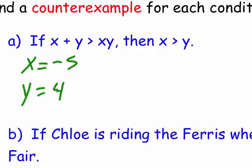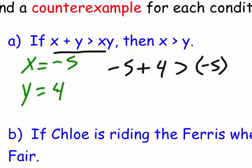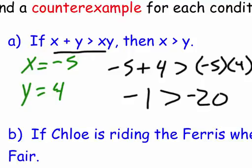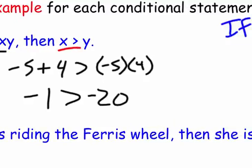So let's use my original statement here. If x plus y is greater than xy, so negative 5 plus 4 is greater than negative 5 times 4. So that gives me negative 1 over here is greater than negative 20. So that works. This is true. Then x is greater than y. Well, this part is false.